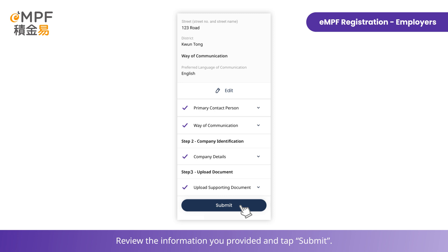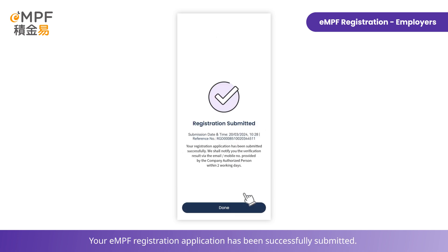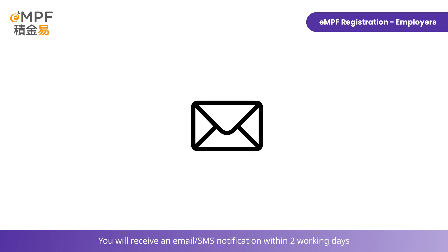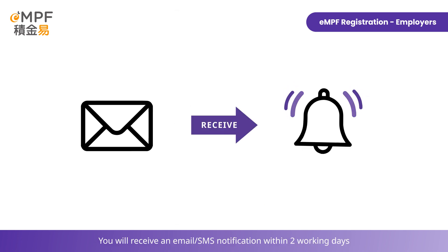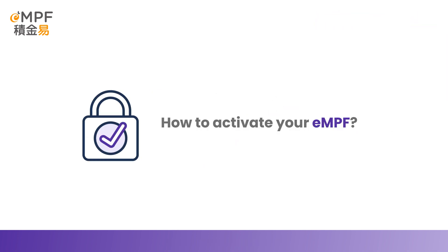Review the information you provided and tap 'Submit'. Read the terms and conditions and tap 'Accept'. Your MPF registration application has been successfully submitted. You will receive an email or SMS notification within two working days once the process is completed.